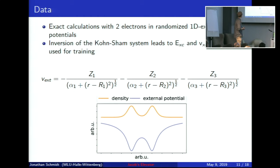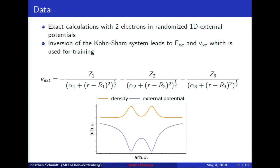It is not easy to actually obtain data for the exchange-correlation energy and potential. To check whether this idea was viable, we started with 1D systems with two electrons — really just toy systems — and by inverting the Kohn-Sham system we can obtain the exchange-correlation energy and potential. The systems used had randomized external potentials with up to three nuclei, randomized soft Coulomb parameters, positions, and nuclear numbers.